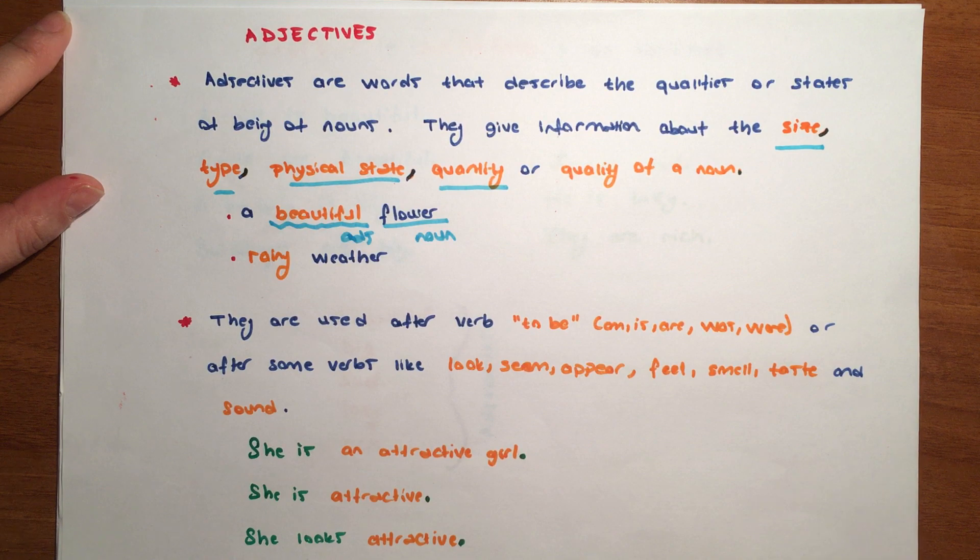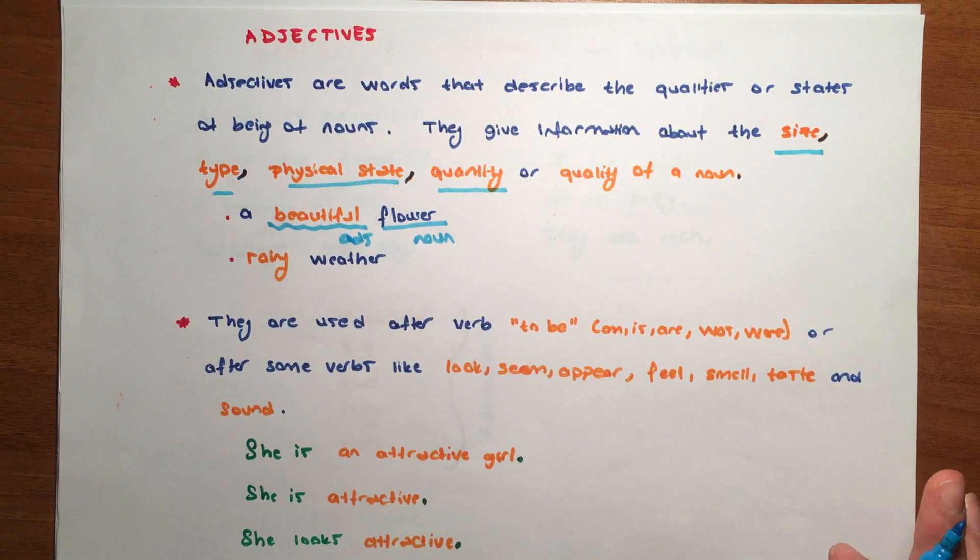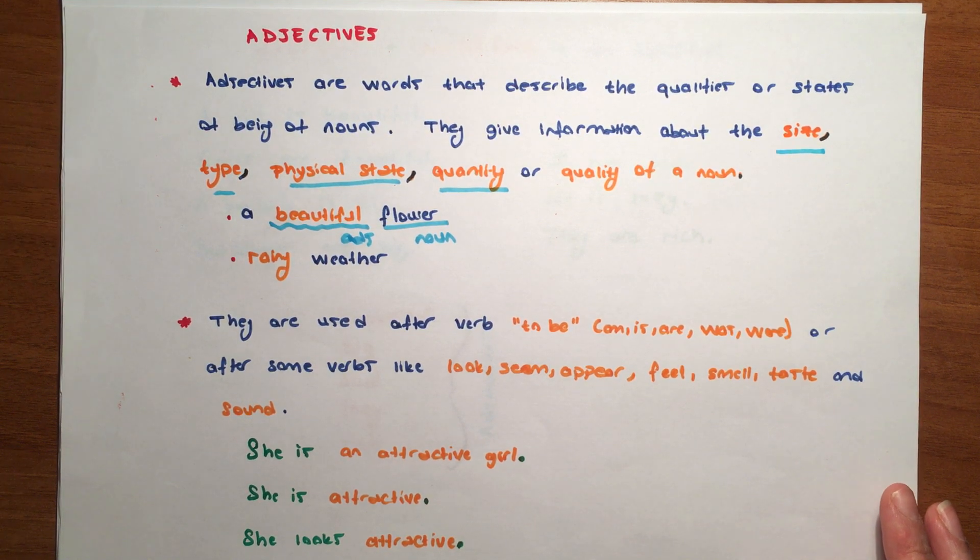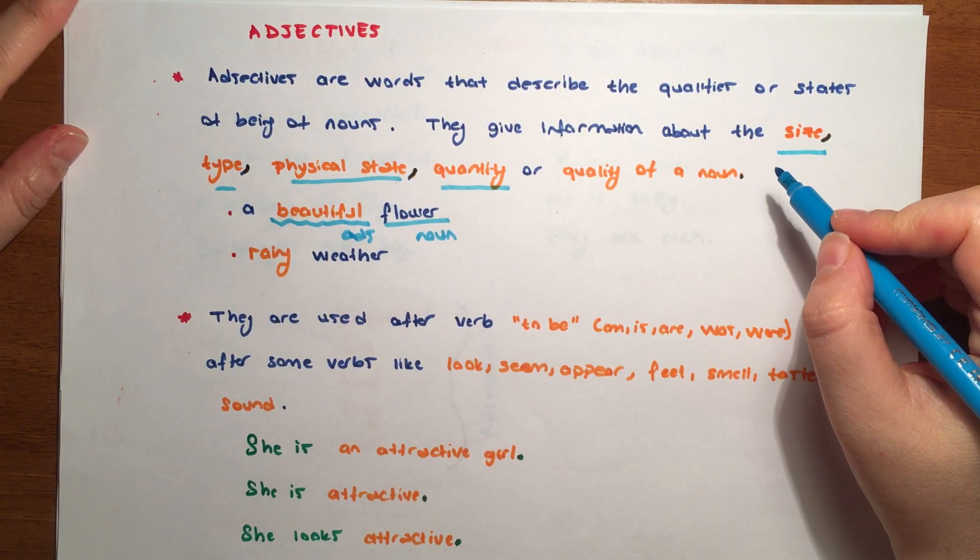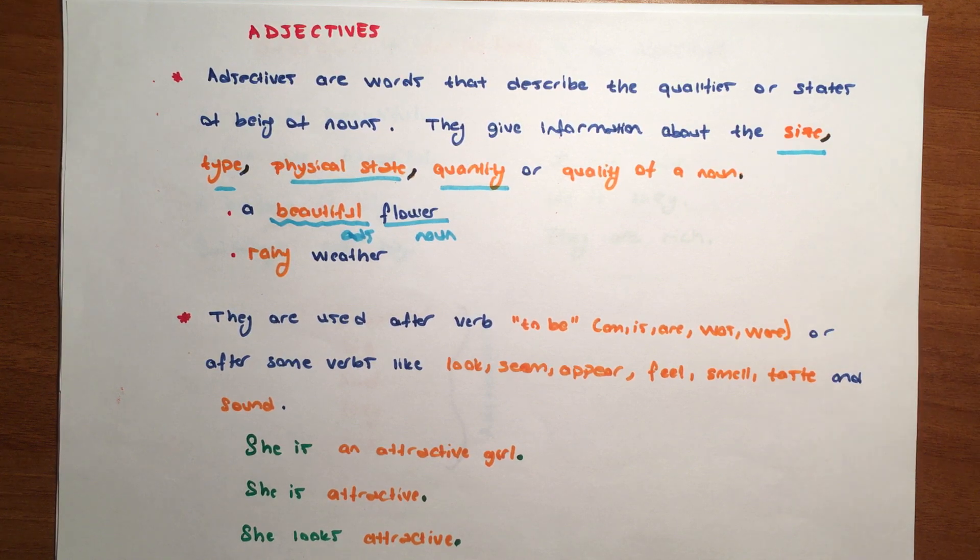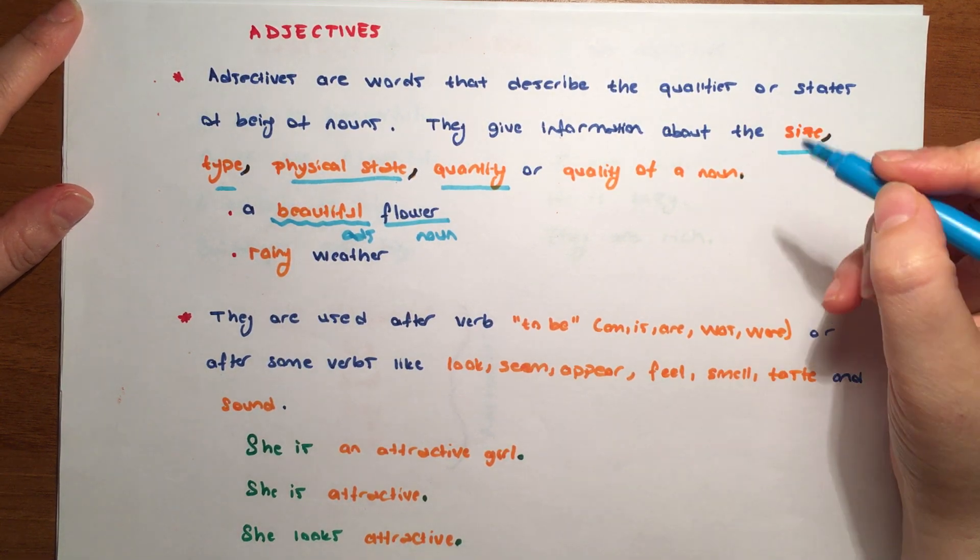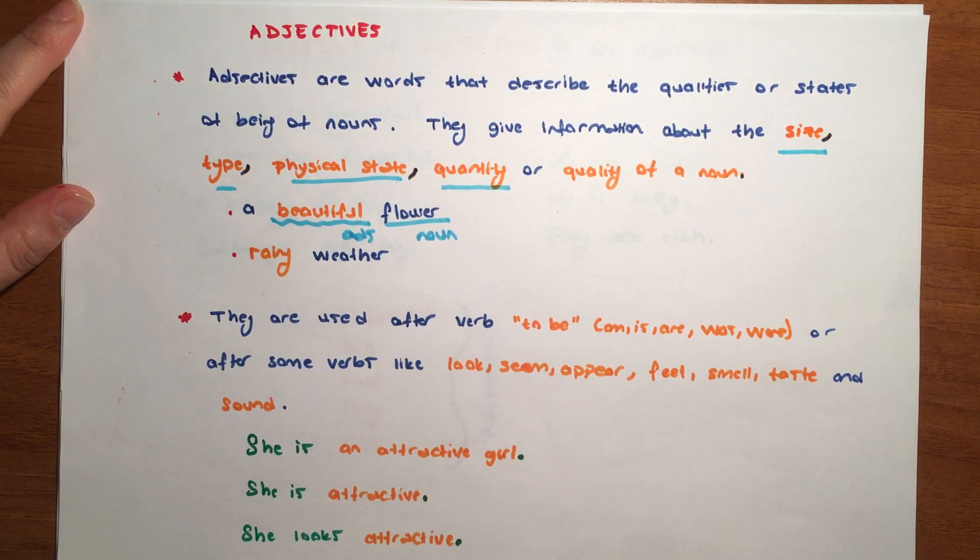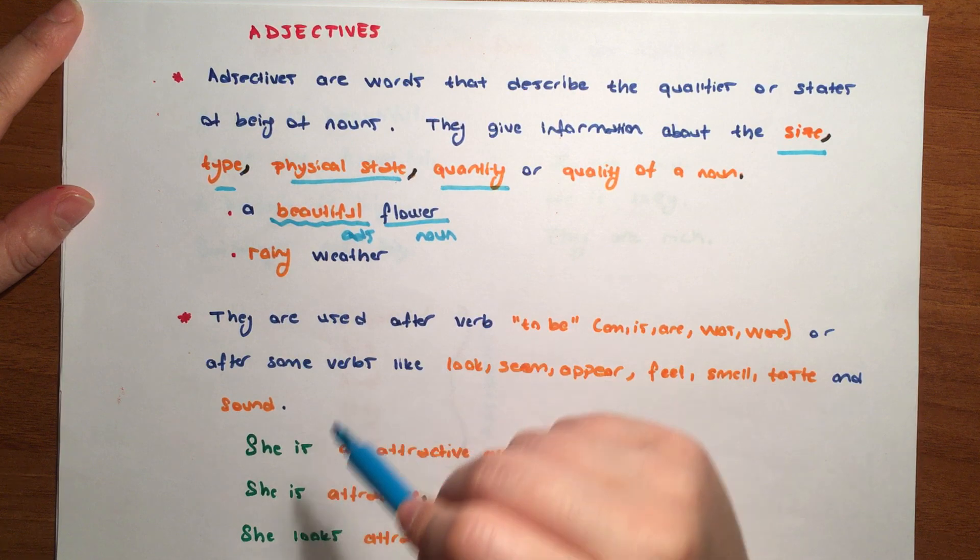Rainy weather - how is the weather? It's rainy. Rainy is the adjective in this sentence. In Turkish, adjectives are used to give information about a noun, just like in English. They define them by their size, number, or characteristics. A beautiful flower - how is the flower? It's a beautiful flower. Beautiful is the adjective here, and flower gives us information about the flower, defining it.